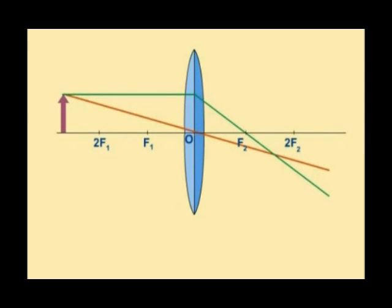Where these two points meet is where the image is and you can draw a third line which goes through the focus on the same side of the object and that will then be refracted to go parallel on the other side. You can see these three lines join up to form an image.